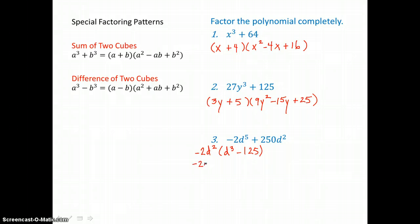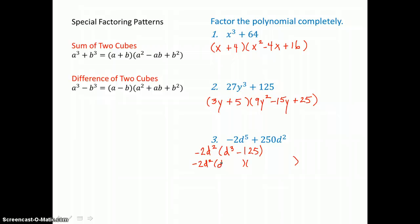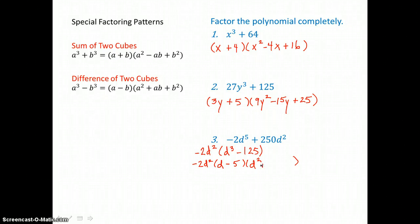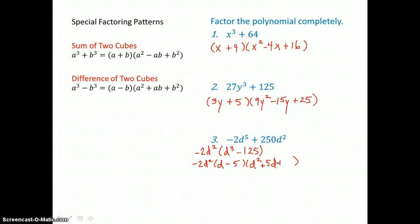We'll factor that difference of two perfect cubes into a binomial times a trinomial. The cube root of d cubed is d, and the cube root of negative 125 is negative 5. To get the trinomial, we square d to get d squared. The middle term is d times negative 5 equals negative 5d, but we change the sign to positive 5d. Then we square negative 5 to get positive 25. Now that expression is completely factored.